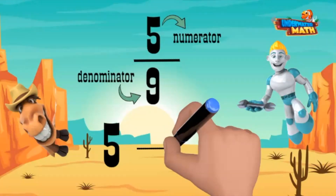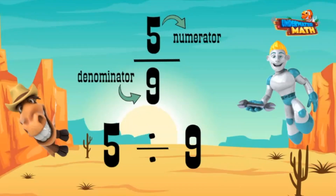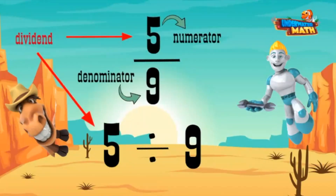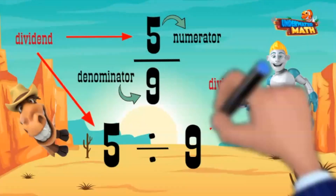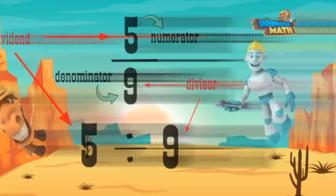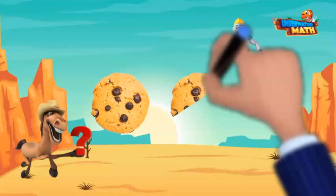Five ninths: five divided by nine. The numerator in a fraction and the first digit in an expression or equation is the dividend — it's the total that you are separating into groups. The second number is the divisor, or the number of groups or parts you are separating the total into.